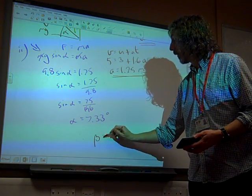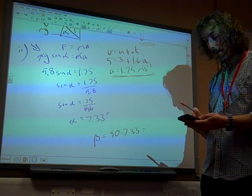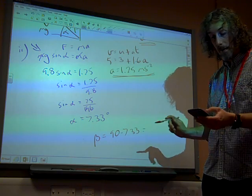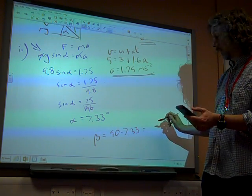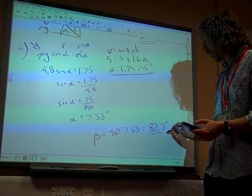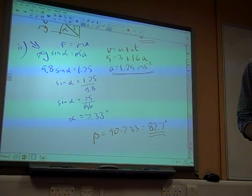So the inclination of the plane to the vertical, we need to do 90 minus 7.33 and get 82.67 degrees. And that is the answer.